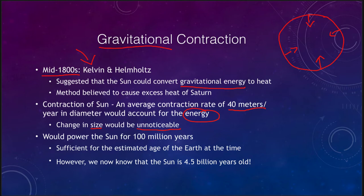This would be sufficient to power the Sun for 100 million years. That was great at the time; it was larger than the estimated age of the Earth. However, we now know that the Earth is four and a half billion years old, and this is not sufficient. So while gravitational contraction did likely play a part in the early history of the Sun when it was forming, it is not how the Sun produces its energy today.